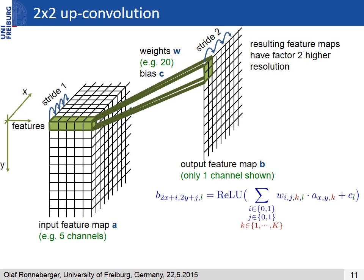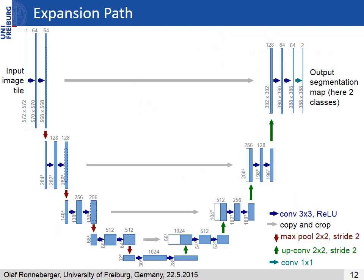The up-convolution uses a learned kernel to map each feature vector to a 2x2 pixel output window, again followed by a non-linear activation function. The output segmentation map has two channels: one for the foreground and one for the background class. Due to the unpadded convolutions, this map is smaller than the input image.